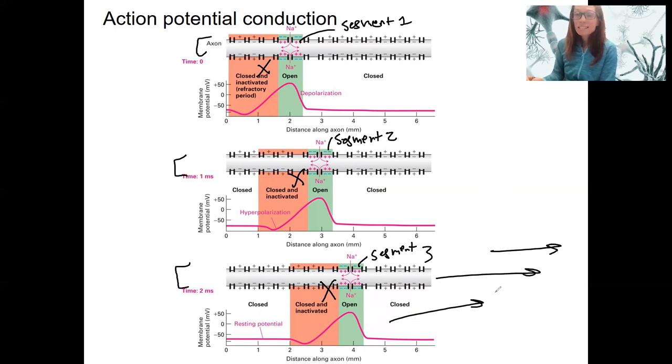And because this action potential is actively propagated at each of these segments, what do I mean by that? Voltage-gated sodium channels open and depolarize to plus 30 millivolts at every single segment. We don't have diminishing or decreasing size of an action potential. Actively propagated is what that is. It is not going to fade if we go down the axon. It is basically regenerated anew down the axon.